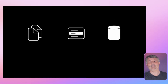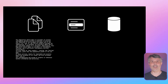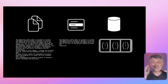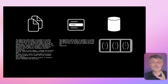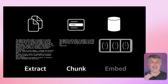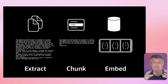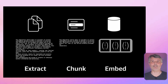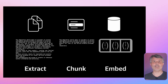When Victor indexed all the library, he took each book and cut it into slices. Then he computed a vector — a mathematical representation of the semantics of each extract — and stored both the vector and the extract in a highly efficient database.